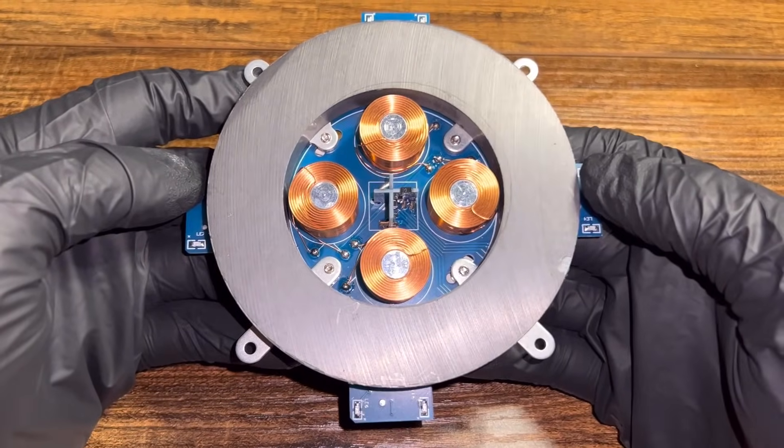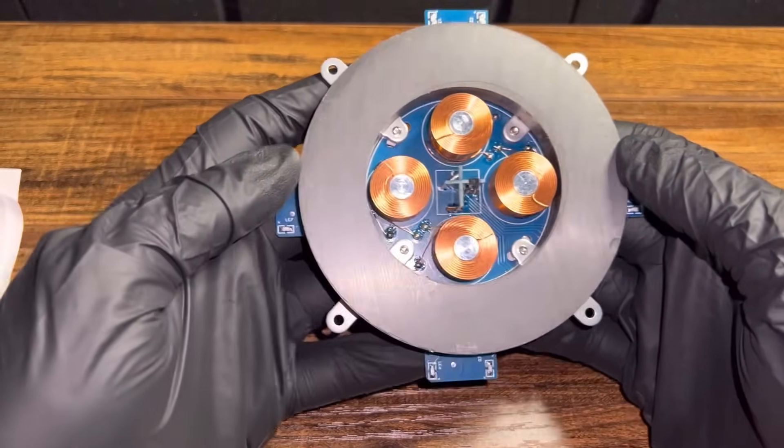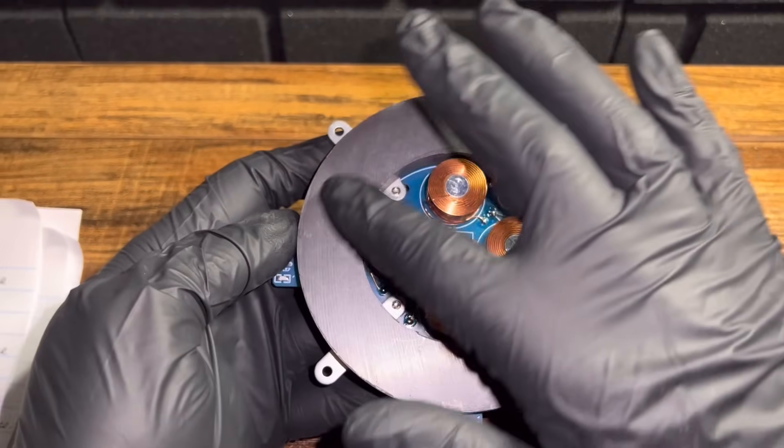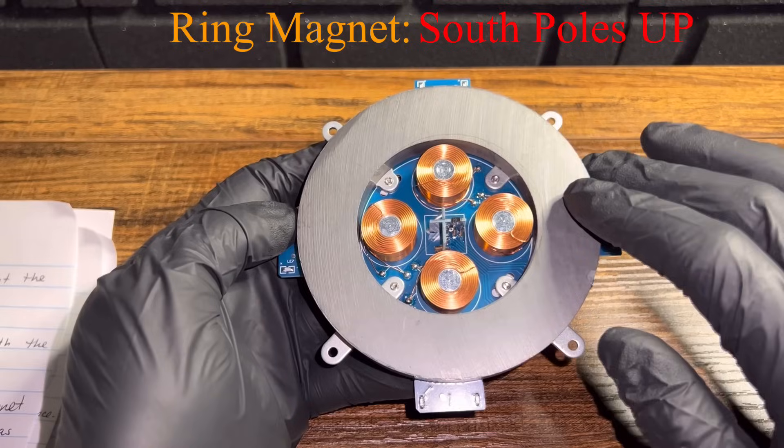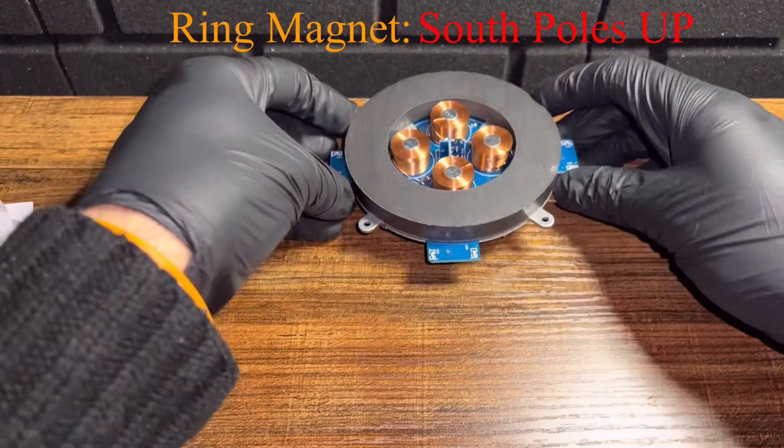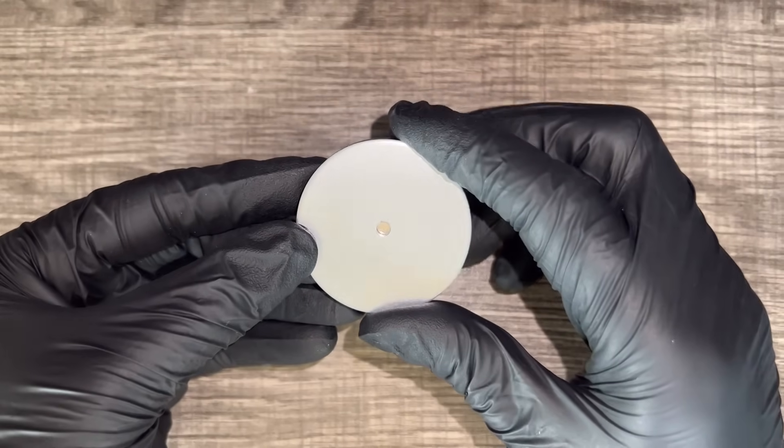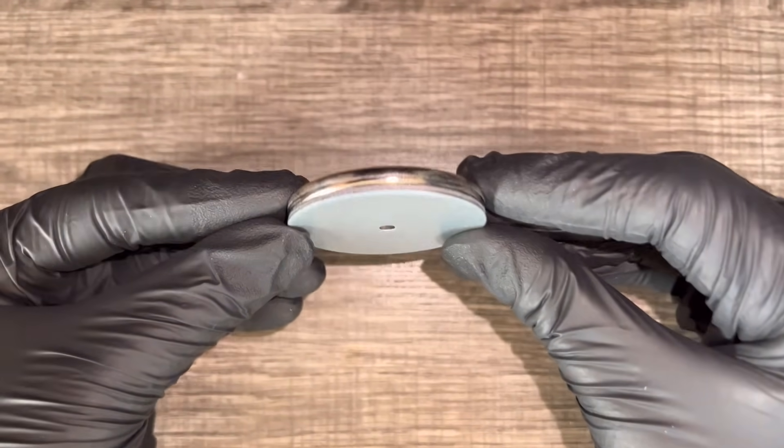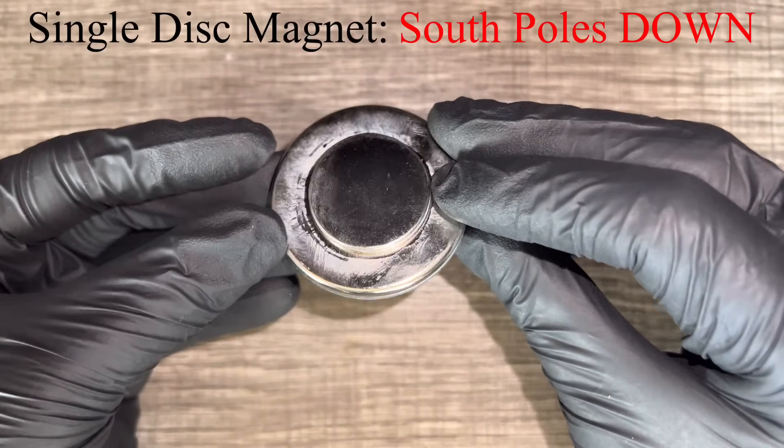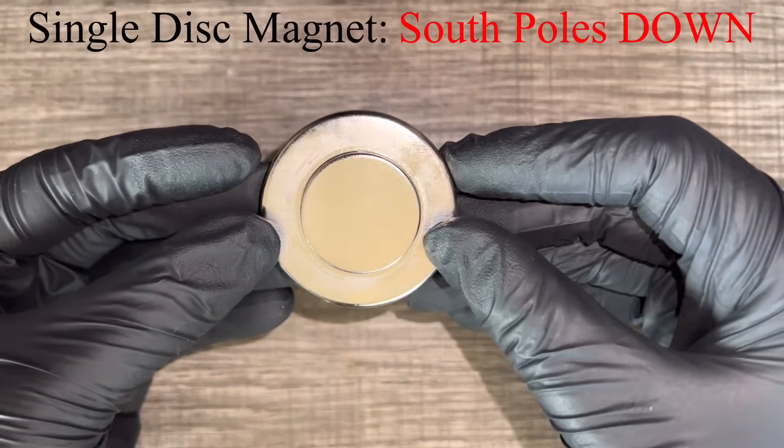To answer this, let's take a closer look at the module and its parts. Facing up, we see a large ring magnet with the south pole facing up. This floating magnet comes with a single disc magnet attached to the bottom. The single disc magnet has its south pole facing down.